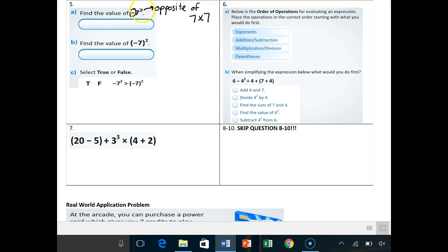Take the opposite of 7 times 7. Where did I get 7 times 7? It's just the 7 squared. So 7 times 7 is 49, so our answer here is negative 49, because what's the opposite of 49? It's negative 49. So our answer here, when there are no parentheses around the negative sign, your answer is negative. So negative 49.